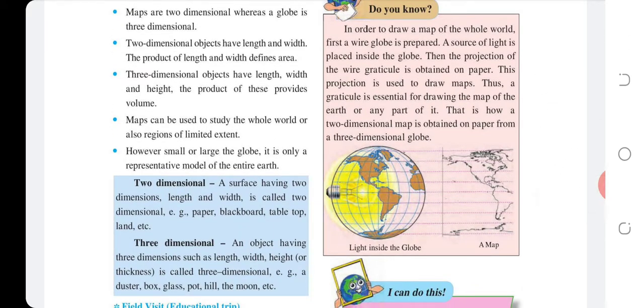Do you know? In order to draw a map of the whole world, first a wire globe is prepared. A source of light is placed inside the globe. Then the projection of the wire graticules is obtained on paper. This projection is used to draw maps. The map of the Earth, or any part of it, is how a two-dimensional map is obtained on paper from a three-dimensional globe.